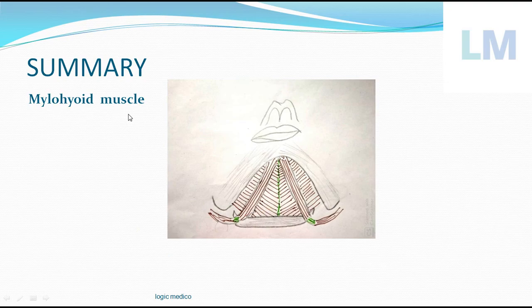In summary, Mylohyoid muscle. Origin: the Mylohyoid line of the mandible on the inner surface of the mandible. Fibers descend downwards medially. The posterior most fibers are attached to the Hyoid bone directly. The middle fibers and anterior fibers meet with similar fibers of opposite side to form Mylohyoid raphe.